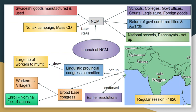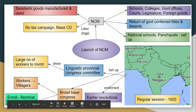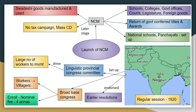The struggles of the NCM included boycott of schools, colleges, government offices, courts, and legislatures, as well as foreign goods. Titles and awards were renounced. National schools were established. In the later stage, there was a no-tax campaign and mass civil disobedience. At the regular Nagpur session of 1920, a resolution was passed establishing the Linguistic Provincial Congress Committee.